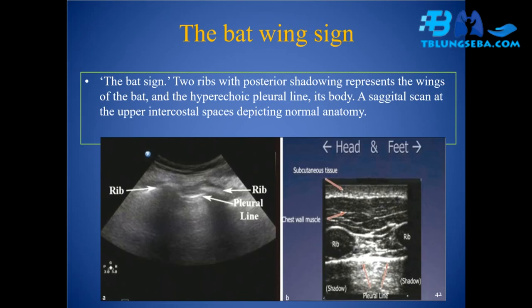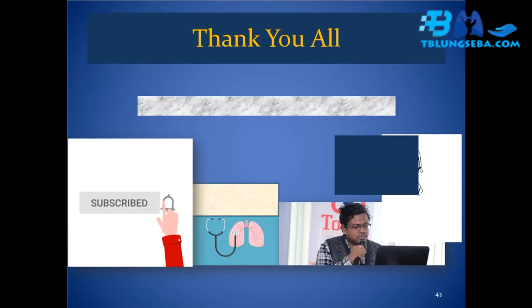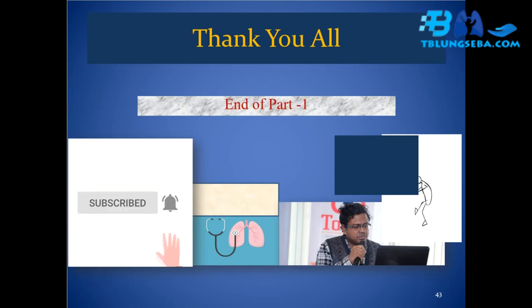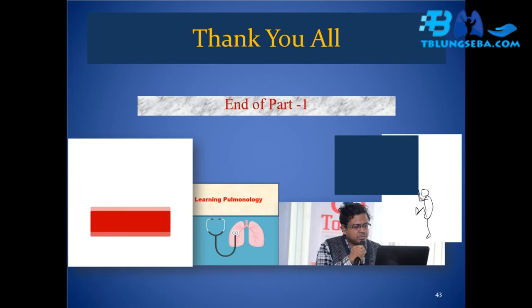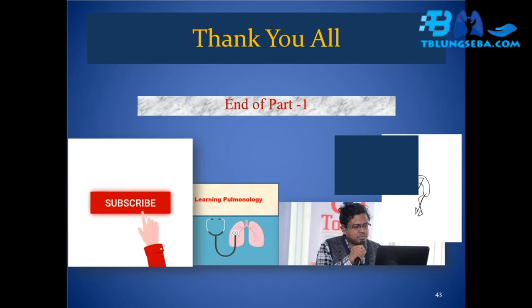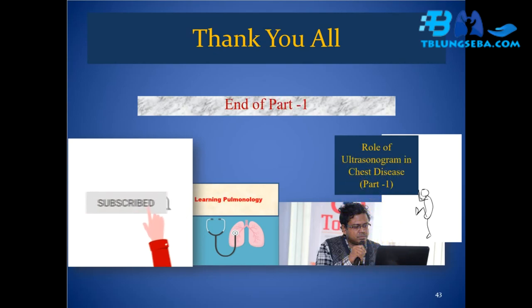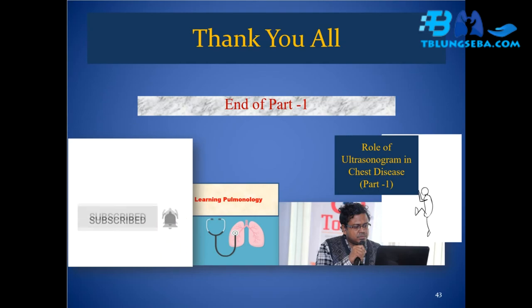The bat wing sign: two ribs with posterior shadowing represent the wings of the bat, and the hyperechoic pleural line represents its body. The sagittal scan at the upper intercostal space depicts normal anatomy. Thank you — end of Part 1. Learning Pulmonology: Role of Ultrasonogram in Chest Disease, Part 1.